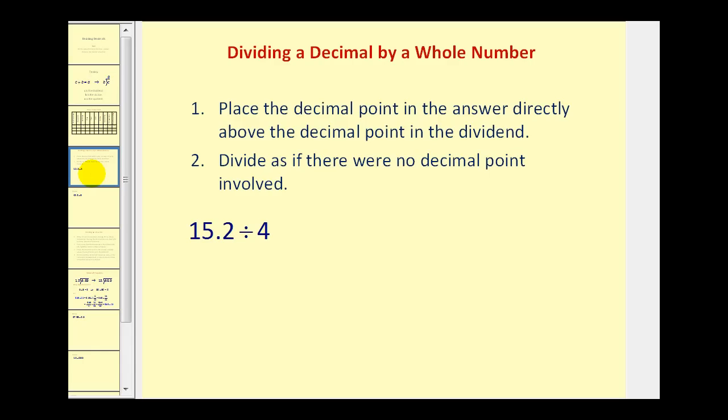So the procedures for dividing by a whole number are to place the decimal point in the answer directly above the decimal point in the dividend, and then divide as we normally would. So we'll go ahead and rewrite this in long division form. And because this is a whole number, we'll move this decimal point straight up into our quotient or our answer, and now we'll divide as we normally would.